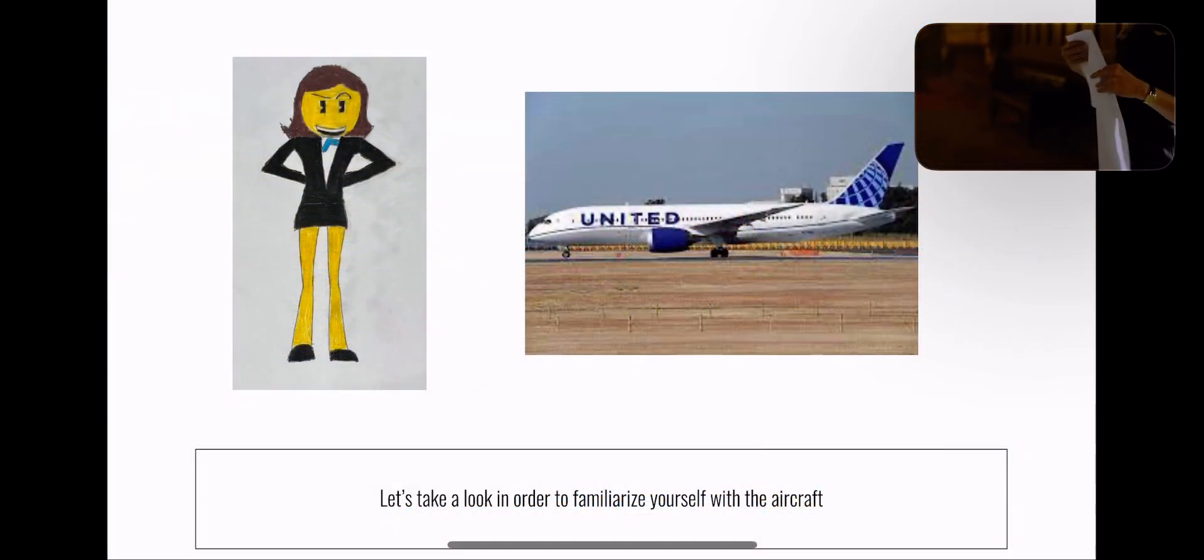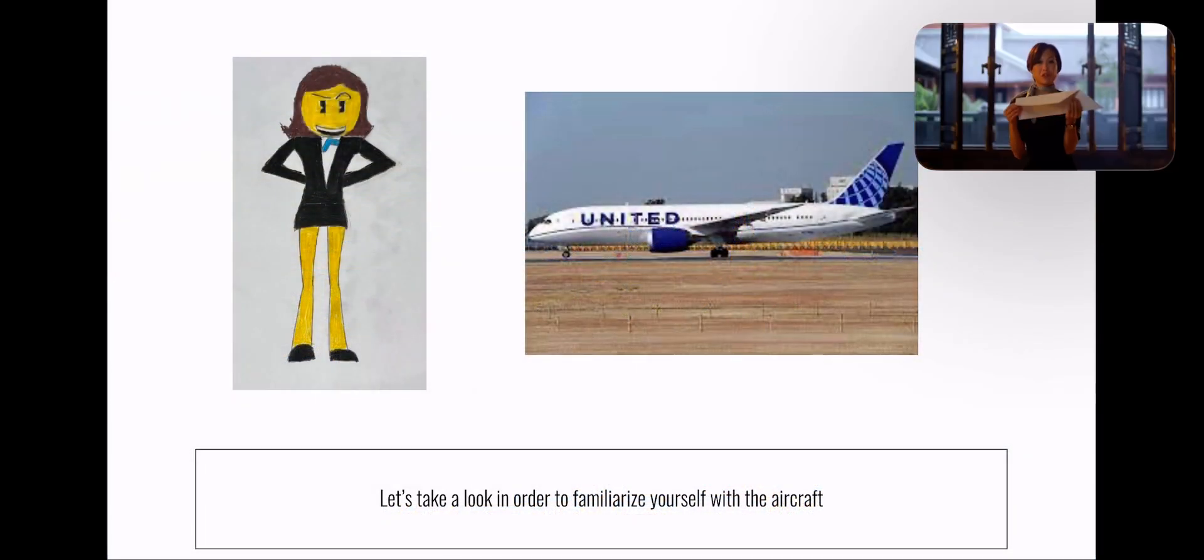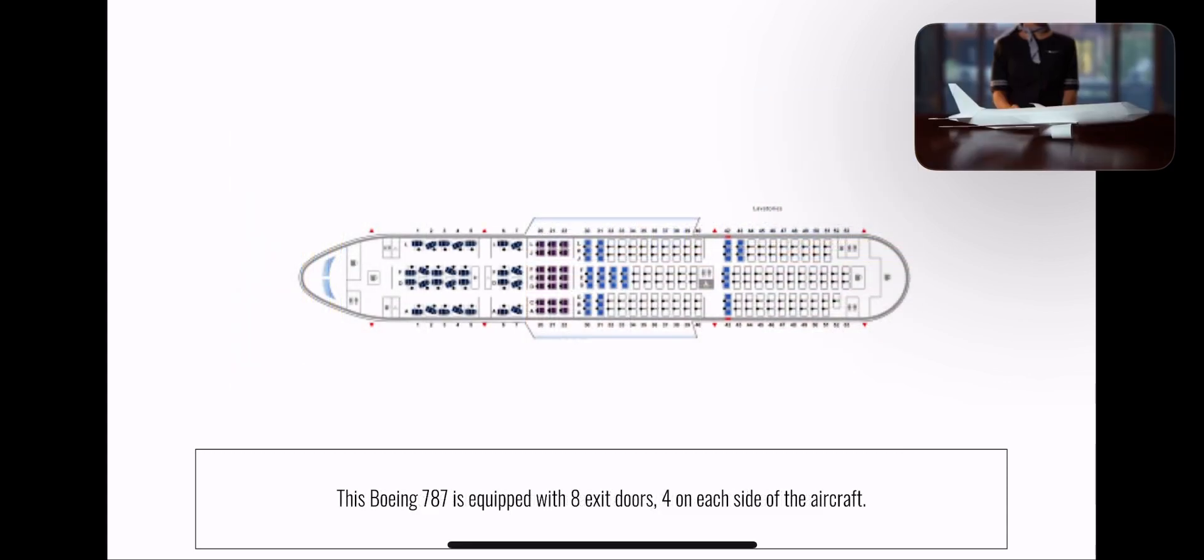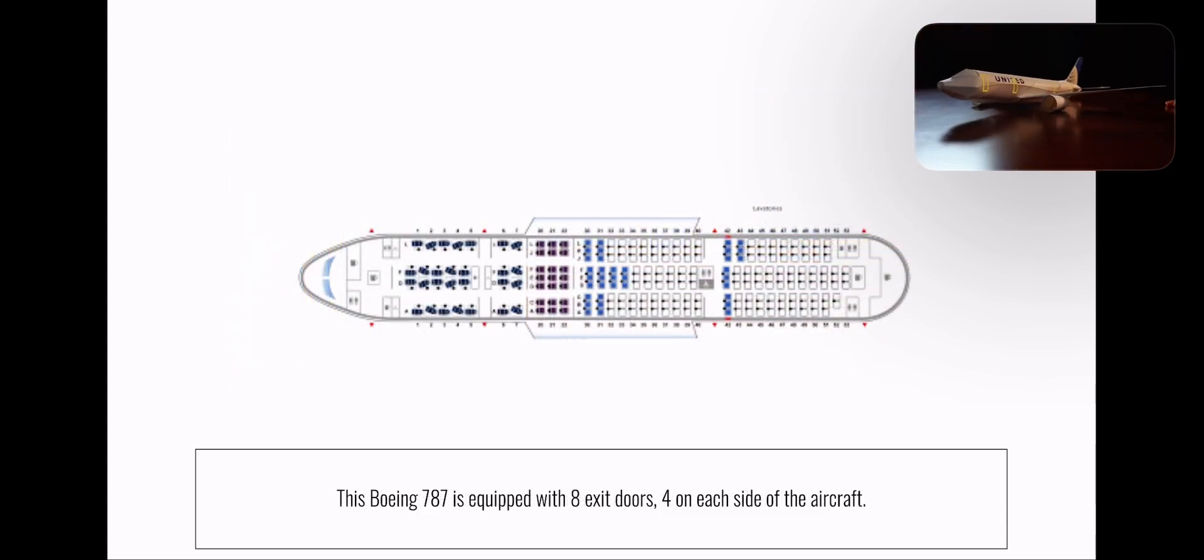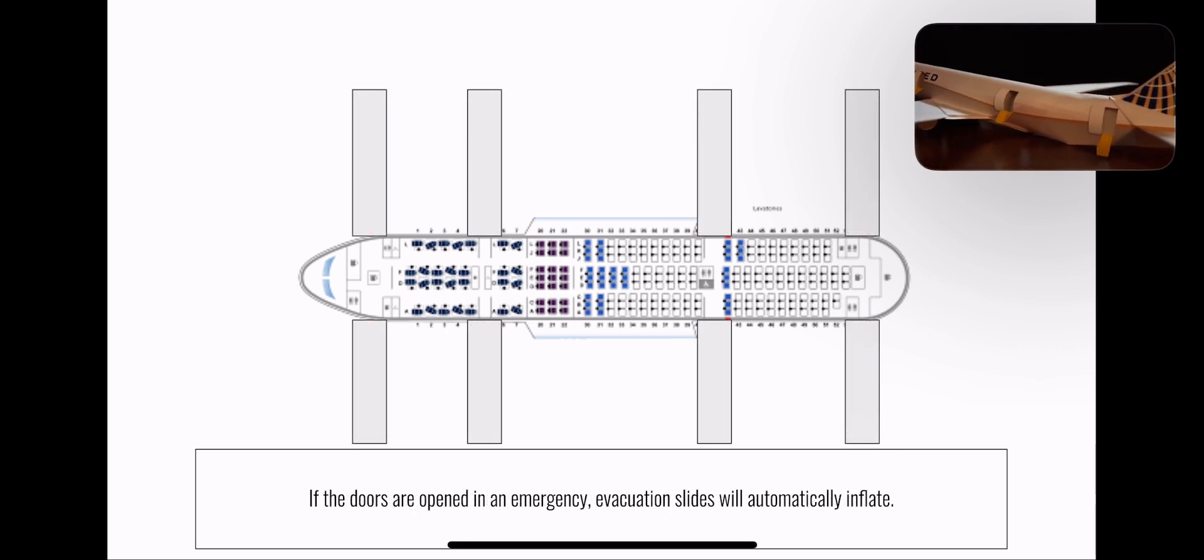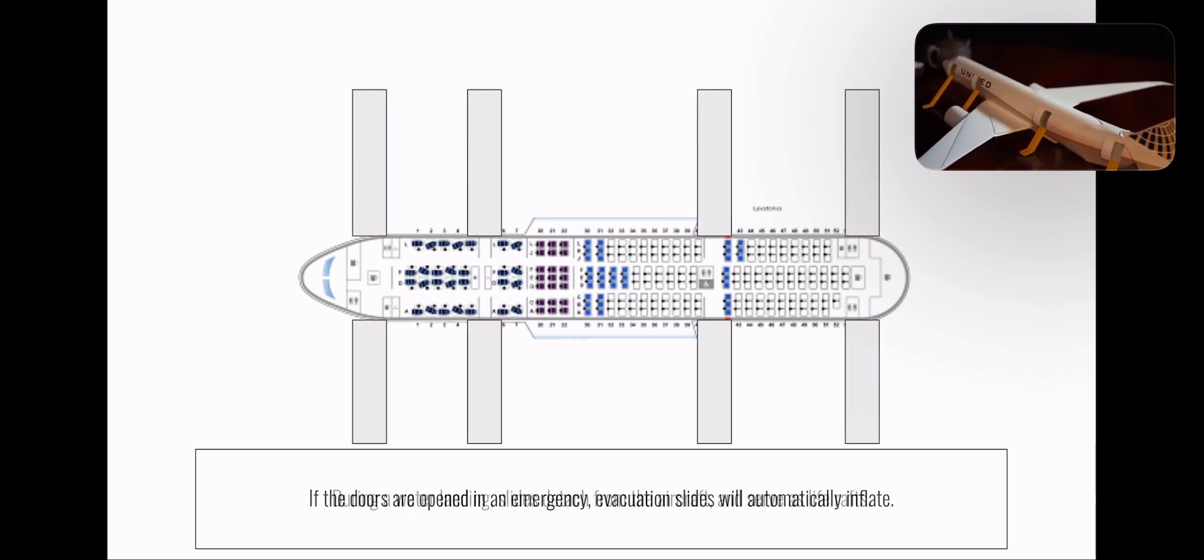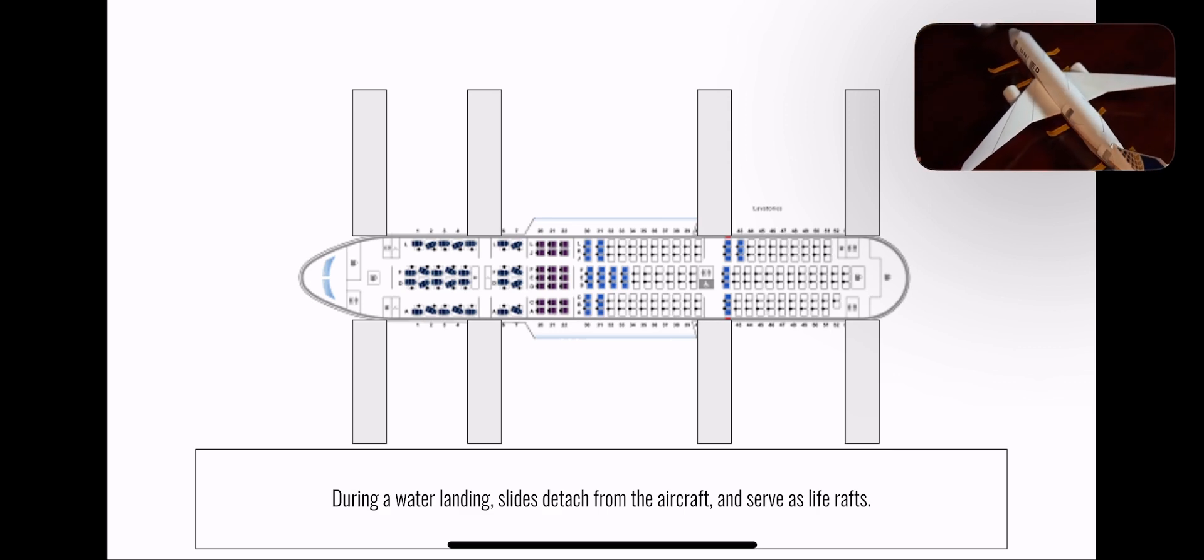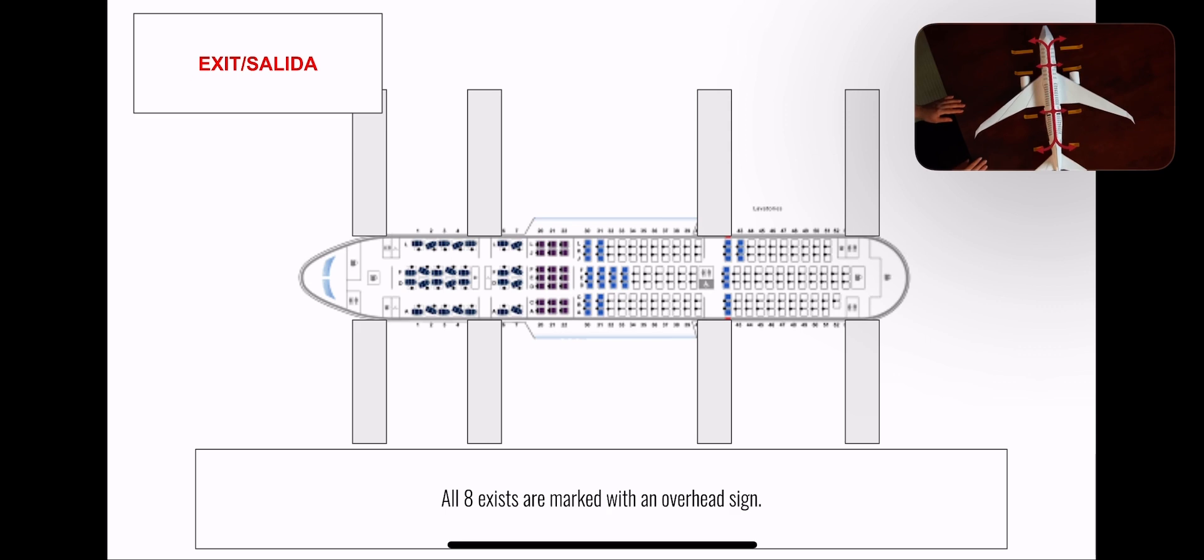Please take a moment to look around in order to familiarize yourself with this aircraft. This Boeing 787 has eight exit doors, four on each side of the aircraft. If the doors are opened in an emergency, slide rafts will automatically inflate. In a water landing, slide rafts detach from the aircraft and are used as life rafts. All eight exits are marked with overhead signs.